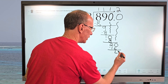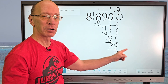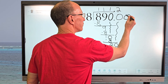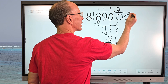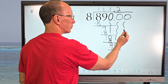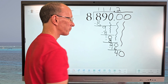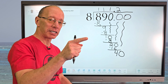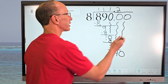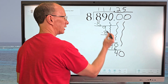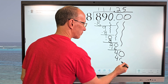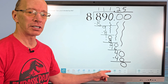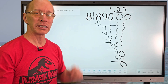I can drop the next number down — remember I can add as many zeros as I want — so I put another zero and drop it down. Now how many times can I put 8 into 40? Five times: 5, 10, 15, 20, 25, 30, 35, 40. I put 5 right here, and 5 times 8 equals 40. I subtract and we have a remainder of zero. So our answer is 111.25.